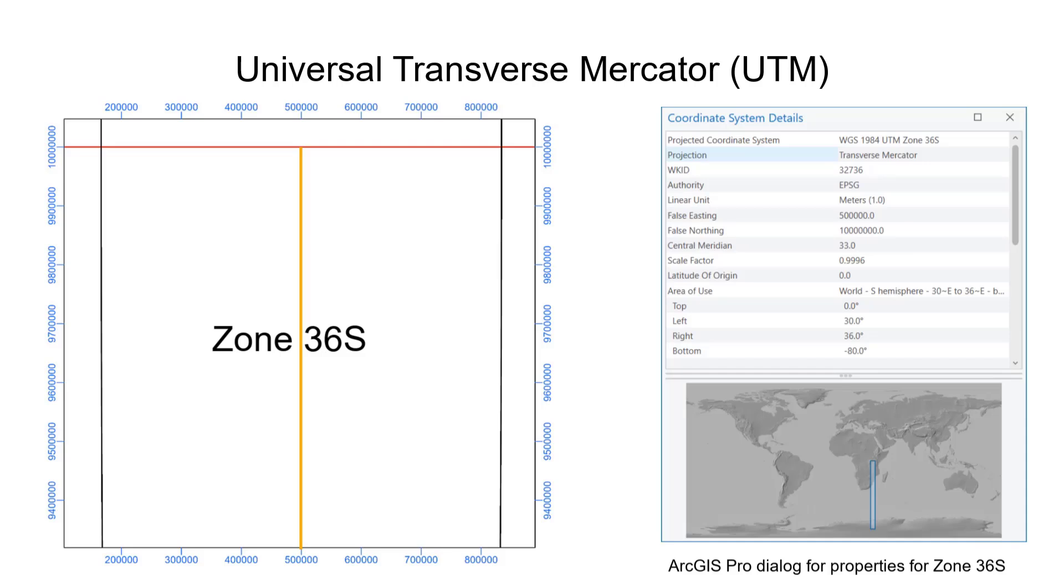The central meridian of each zone is given a false easting of 500,000. Grid values to the west of this central meridian are less than 500,000, to the east more than 500,000.